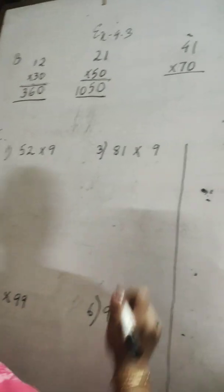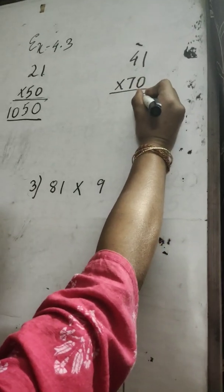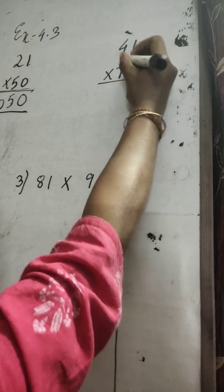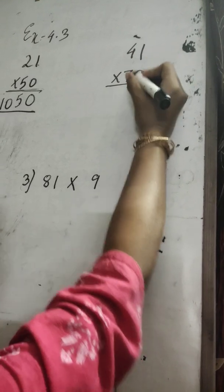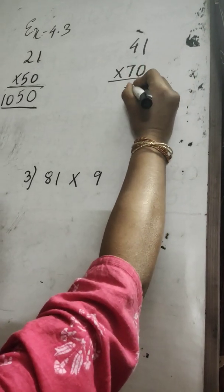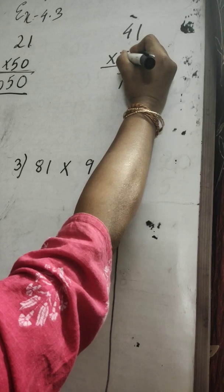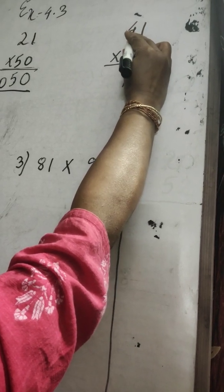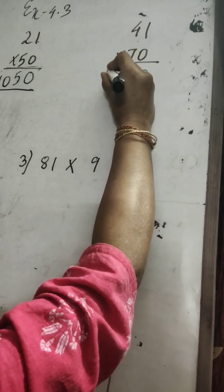Another example: write zero. Now multiply seven with the number in the ones place — seven ones are seven. Then multiply seven with the number in the tens place — seven fours are twenty-eight.